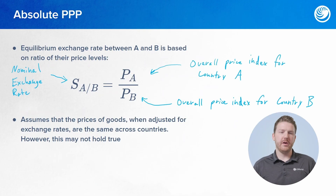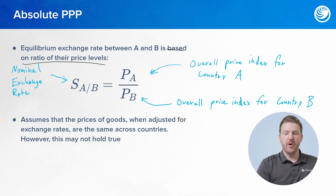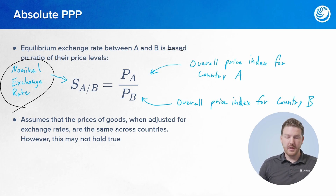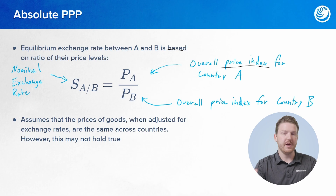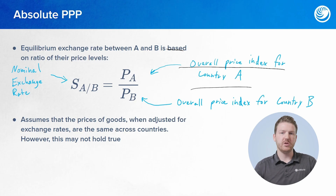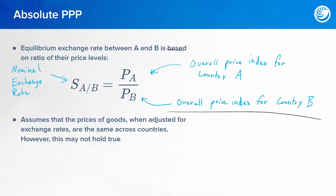Absolute PPP says that the equilibrium exchange rate between countries A and B will be based on the ratio of their price levels. In this formula, S sub A divided by B is the nominal exchange rate between countries A and B. Then P sub A divided by P sub B is the ratio of both countries' price levels or price indexes. P sub A is the overall price level or price index for country A, representing the average price of goods and services for that country, and P sub B is the same for country B.